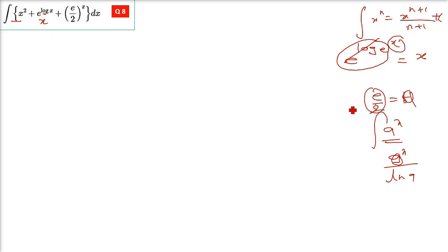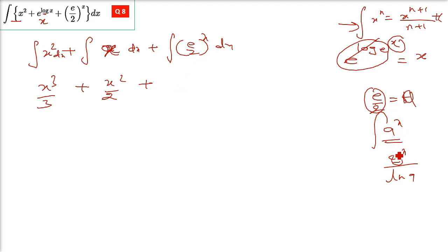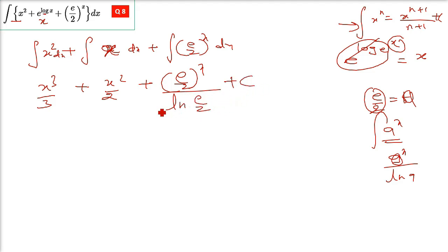For (e/2)^x, e by 2 is a constant — e is 2.7 something — so we call it a. Integration of a raised x is a raised x divided by ln a. So the final answer is: x cube by 3, plus x squared by 2, plus (e/2)^x divided by ln(e/2), plus constant of integration. This is your final answer — just remember the relationships.